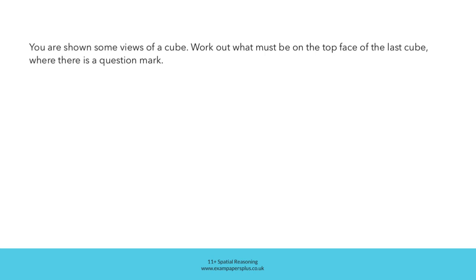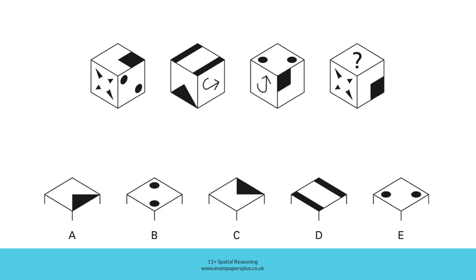Now you can try a second similar question. Remember, you are shown some views of a cube — work out what must be on the top face of the last cube where there is a question mark. Think about the relationship between the faces and edges which are shared, and use what you discover to decide which one of the five answer options represents the missing figure. Pause the video and try to work out the right answer within 30 seconds, then resume to check the answer together.